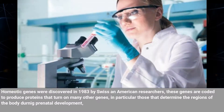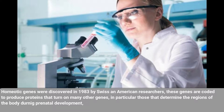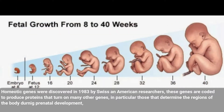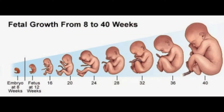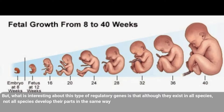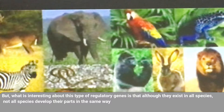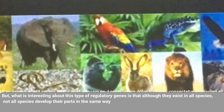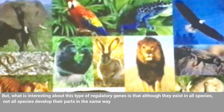Homeotic genes were discovered in 1983 by Swiss and American researchers. These genes are called to produce proteins that turn on many other genes — in particular, those that determine the regions of the body during prenatal development. What is interesting about this type of regulatory gene is that although they exist in all species, not all species develop their parts in the same way.